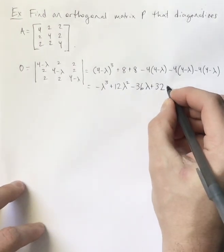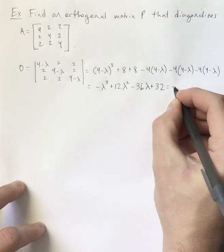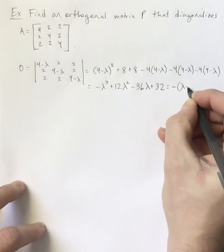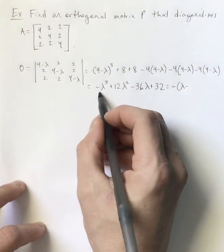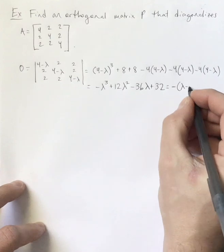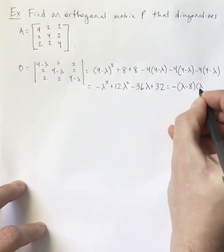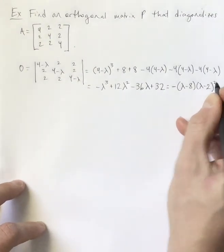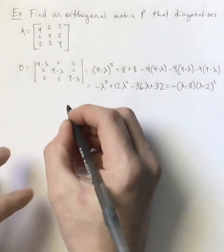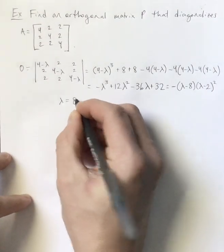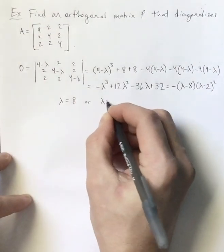But this is equal to, if I factor a negative out to make this leading coefficient positive, lambda minus 8 times lambda minus 2 squared. So we can see that either lambda is 8 or lambda is 2.